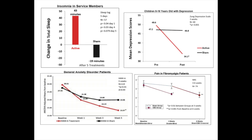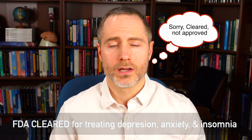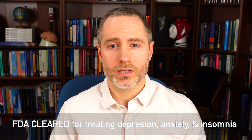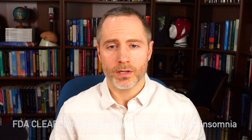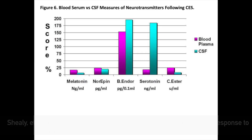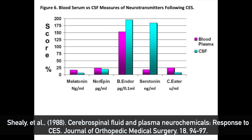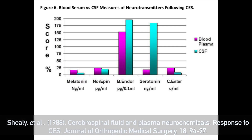CES also tends to decrease fast beta waves, which are associated with overthinking. CES units have been found to be efficacious in a number of clinical disorders through clinical studies and randomized controlled trials. It's also been approved by the FDA for the treatment of depression, anxiety, and insomnia. There's significant evidence that CES units tend to increase beta endorphins, which reduce pain, and also serotonin, which has been found to reduce negative emotionality and increase your sense of satisfaction.